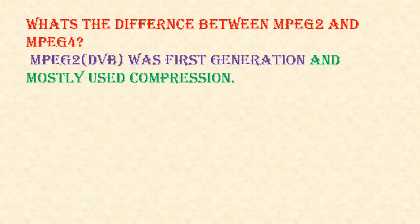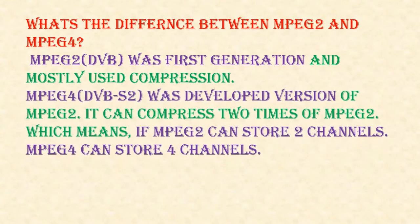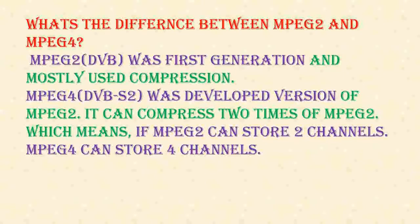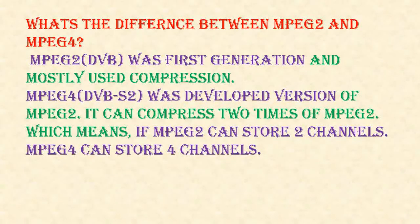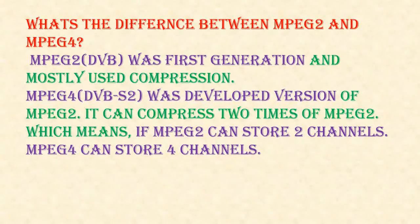What's the difference between MPEG 2 and MPEG 4? MPEG 2 DVB was the first generation and mostly used compression. MPEG 4 DVB-S2 was a developed version of MPEG 2. It can compress two times more than MPEG 2, which means if MPEG 2 can store two channels, MPEG 4 can store four channels.